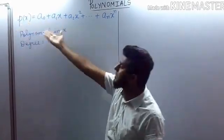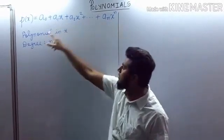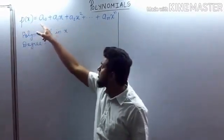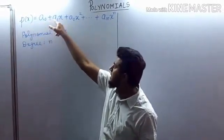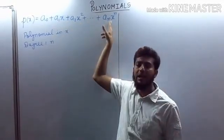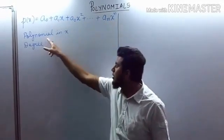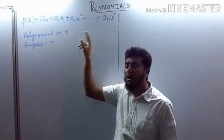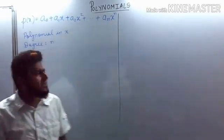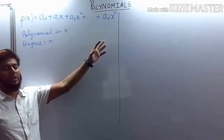If we replace x by y, all x's will be replaced by y and it will be p(y) = a₀ + a₁y + a₂y² + ... + aₙyⁿ. That will be called a polynomial in y. Generally we use x as the independent variable, so it is expressed in terms of x only.